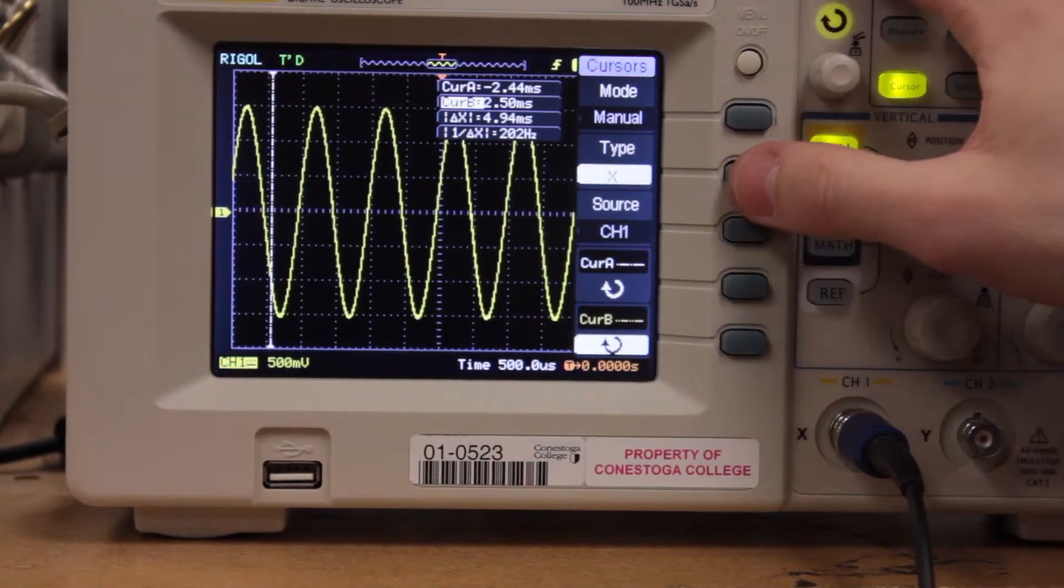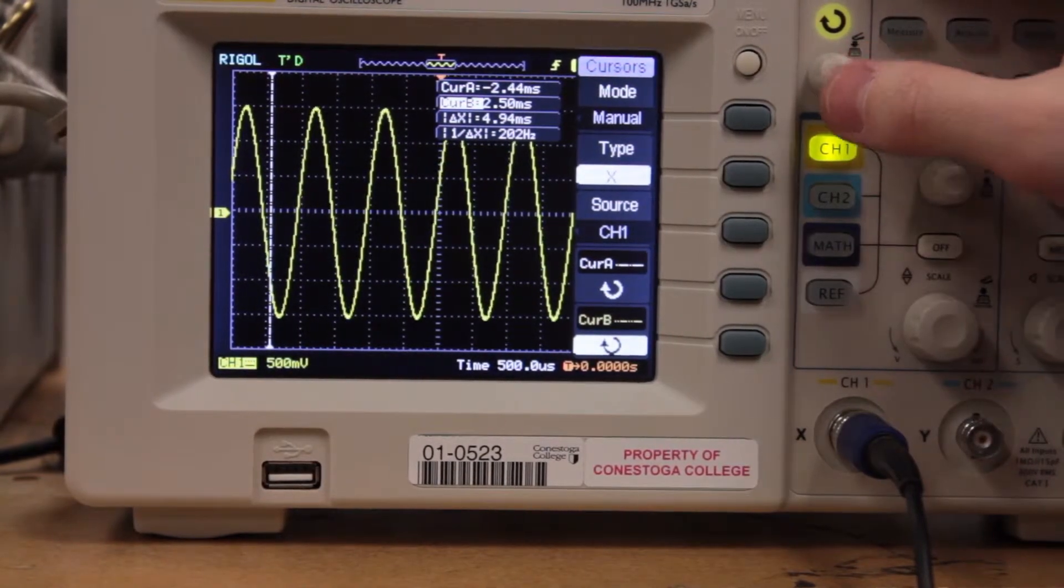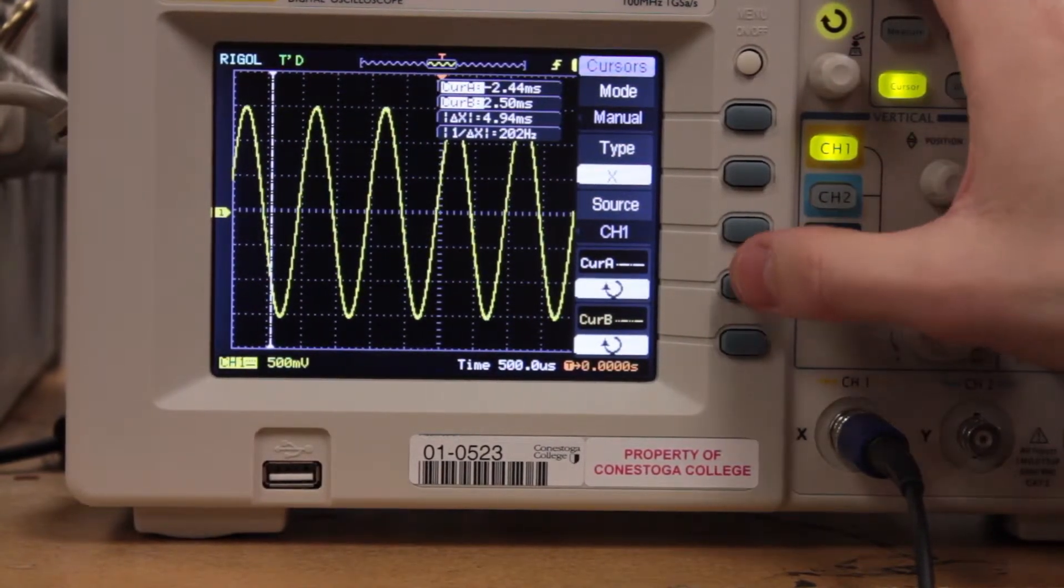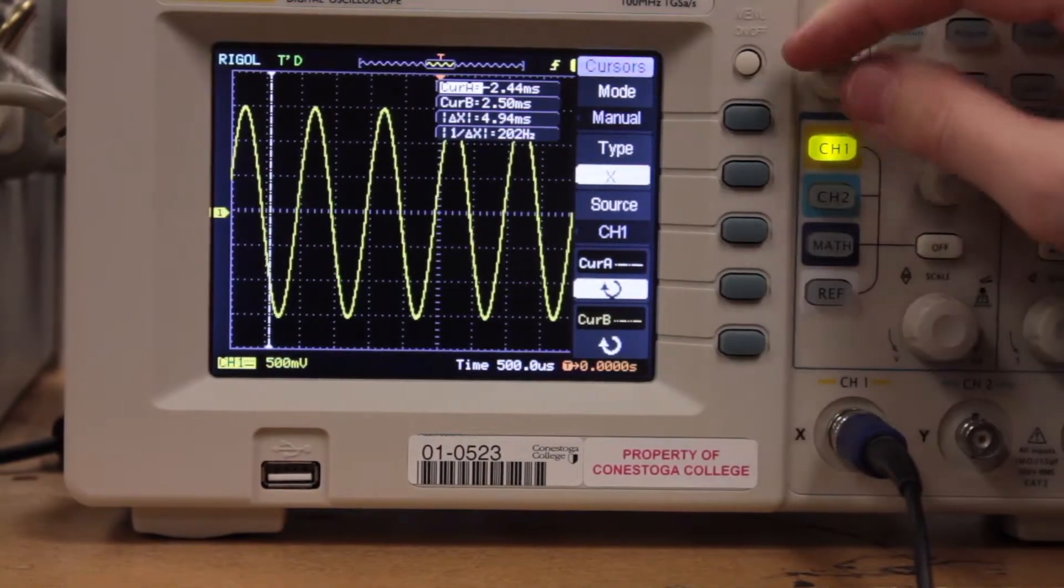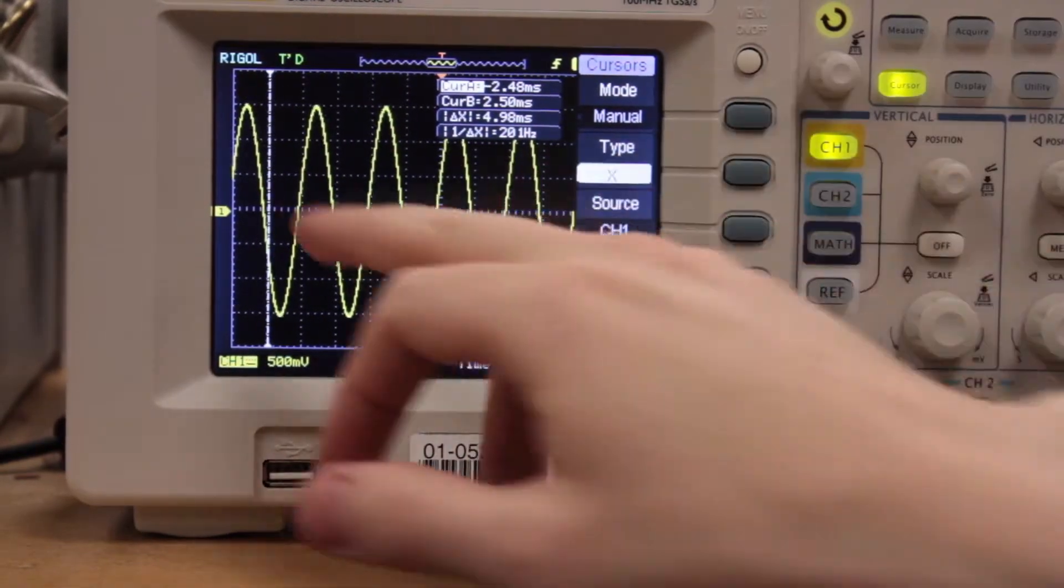First of all we're going to change the cursors over to the x-axis. Then we're going to move down to cursor A. And we're going to move that. That's the white one here.